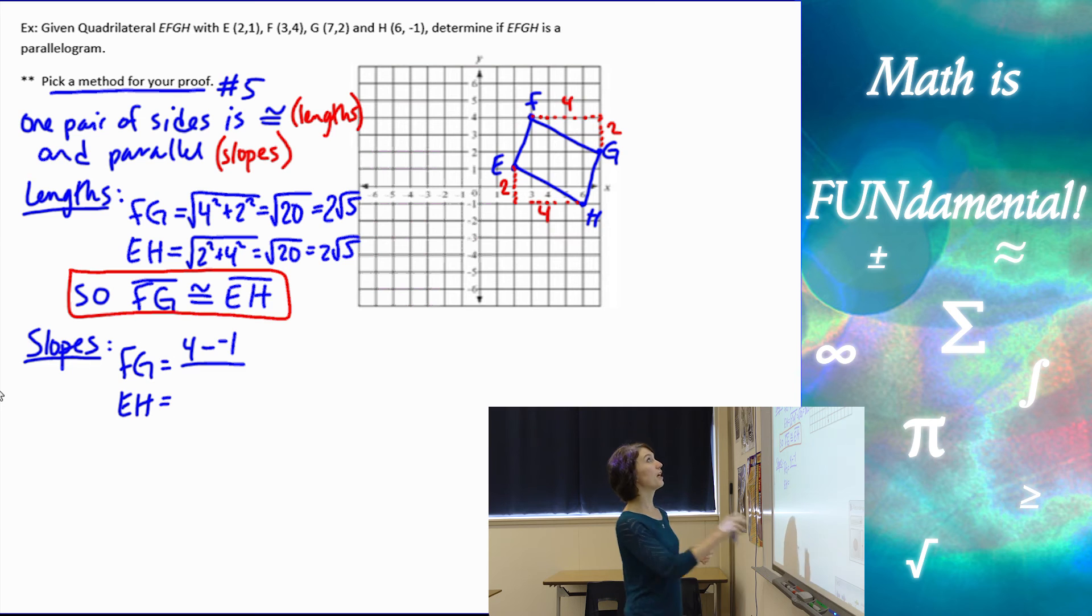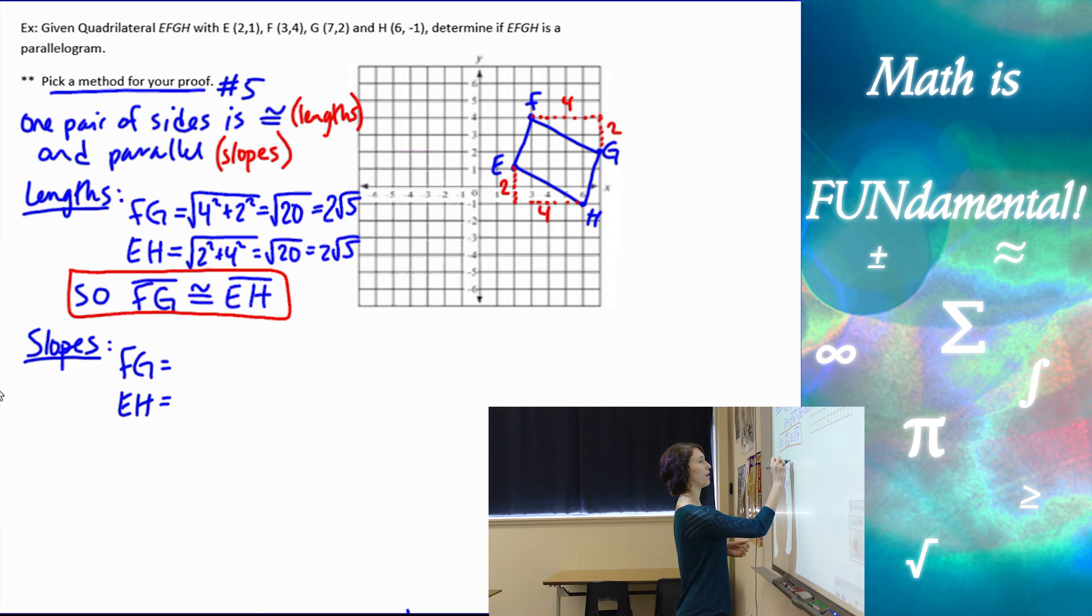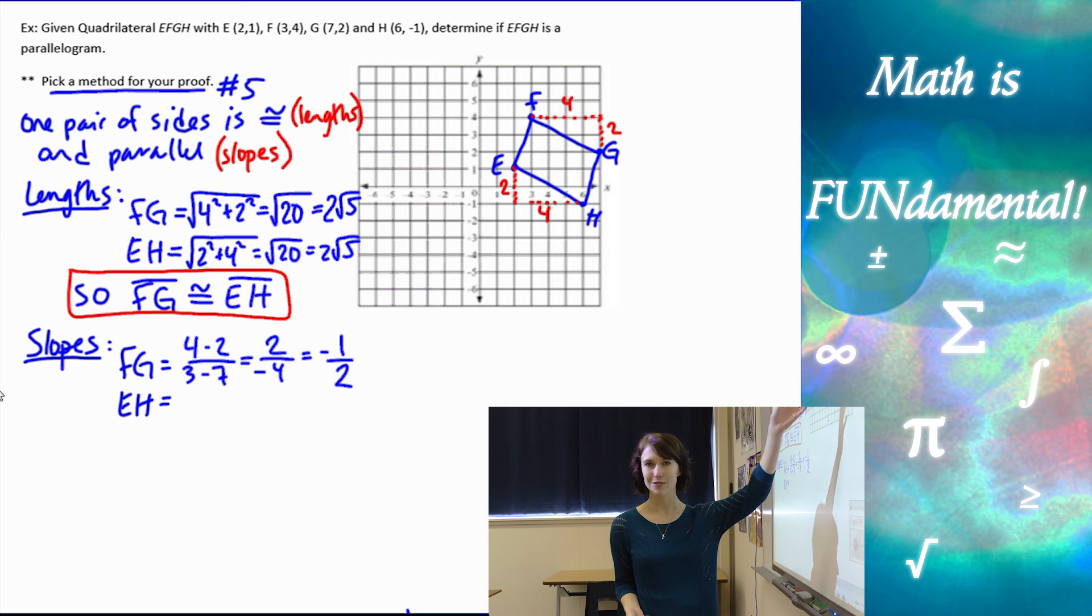From F to G: 4 minus 2 over 3 minus 7, that's 2 over -4, which is -1/2. Because we have a graph, we could have also used our graph to find the slopes, but we want to use our formulas.